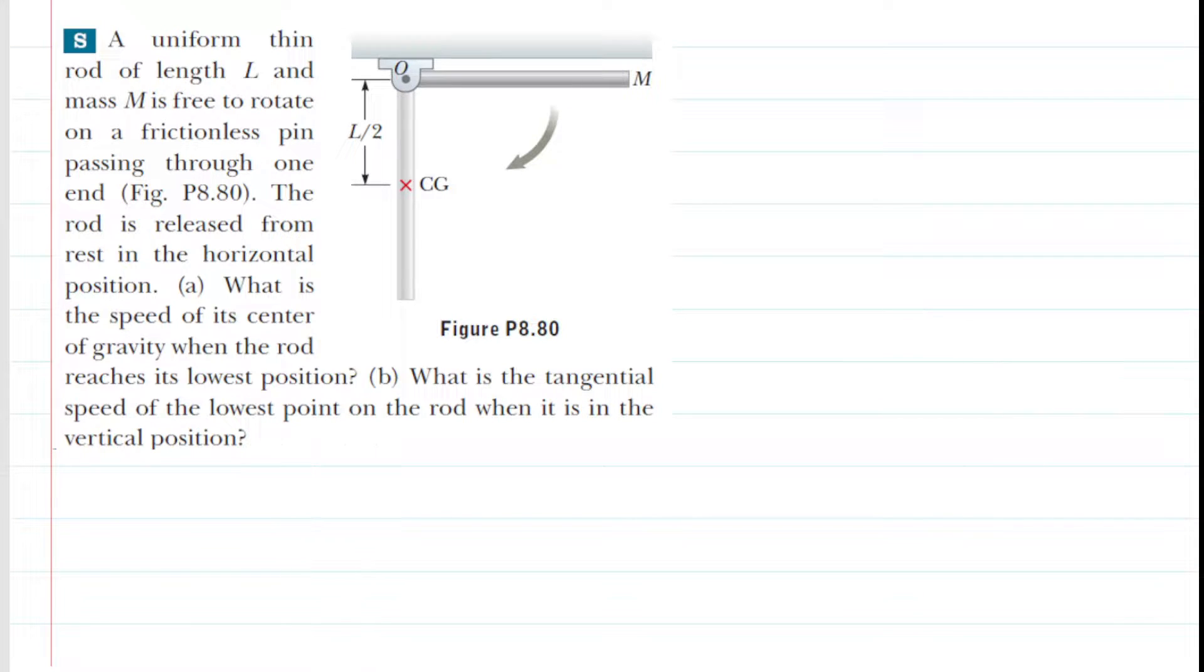If you haven't done so yet, make sure you pause the video and re-read the problem before listening on. What we're going to be able to do to calculate the speed of the center of gravity when the rod reaches its lowest position is use the conservation of mechanical energy.